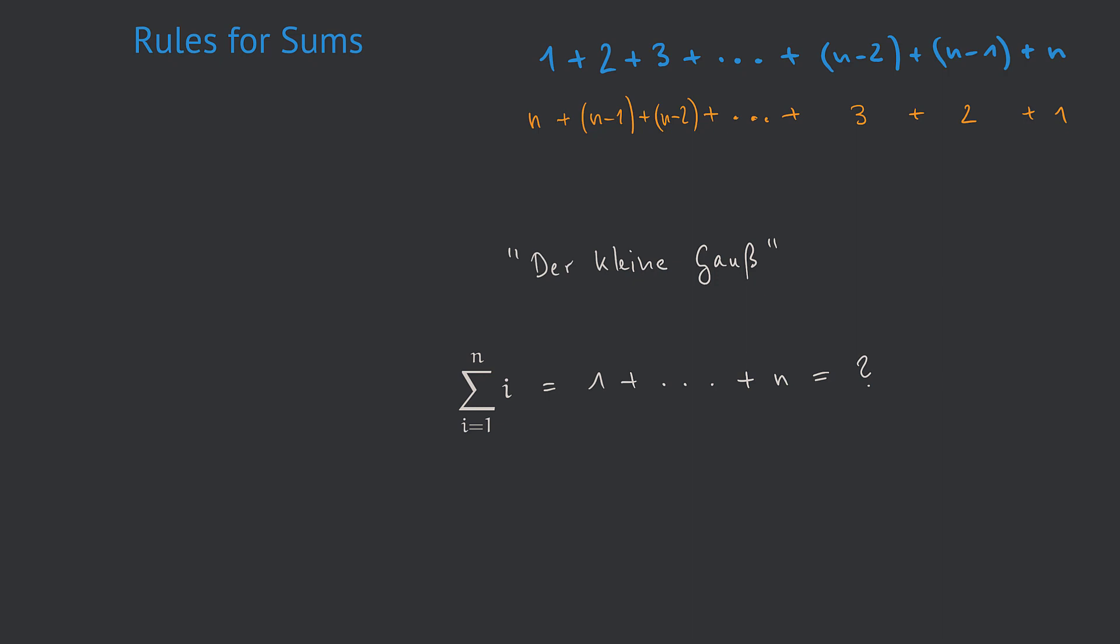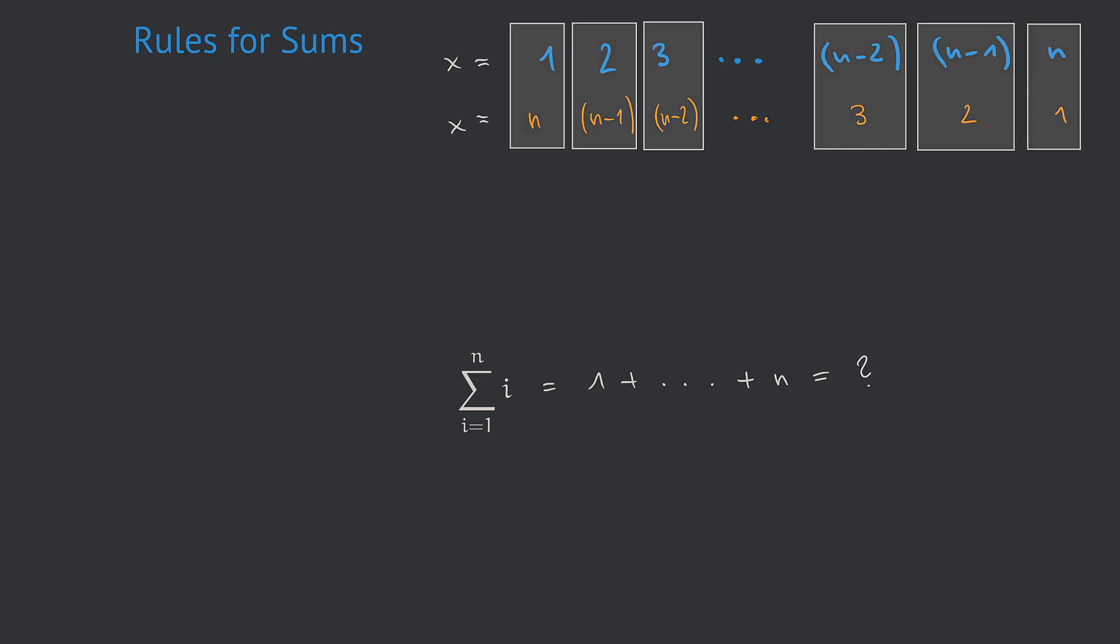Now the trick is that when we try to sum up both of these equations, we get a surprisingly simple result. Now for reasons of clarity, let's first erase all plus signs. Now let's build the following pairs of summands at the same positions. Now if we look a little closer at these pairs, we find something very nice. Every two numbers within one given pair add up to n plus 1.